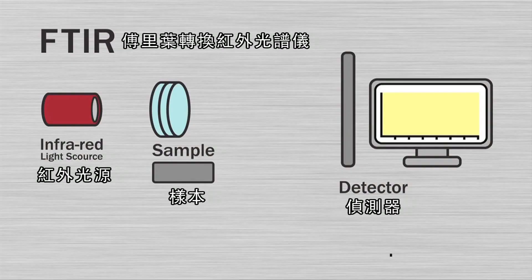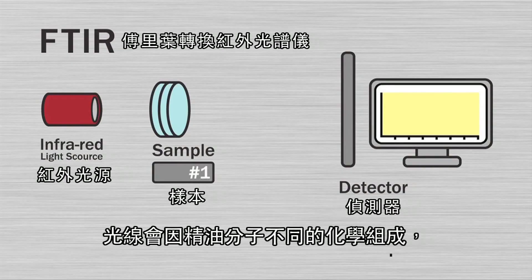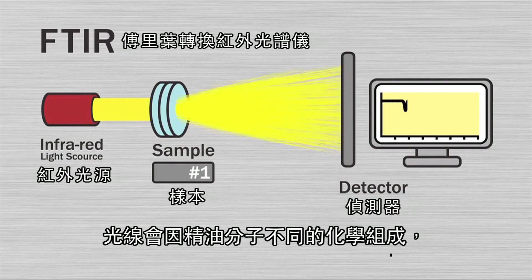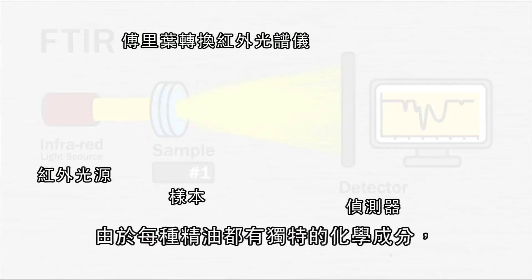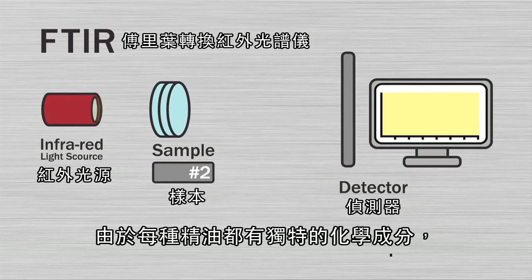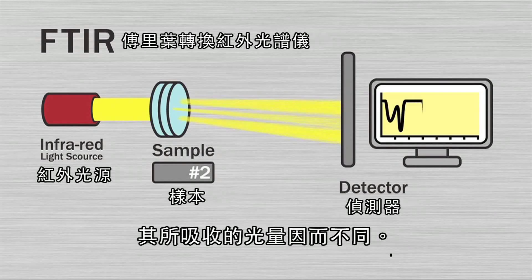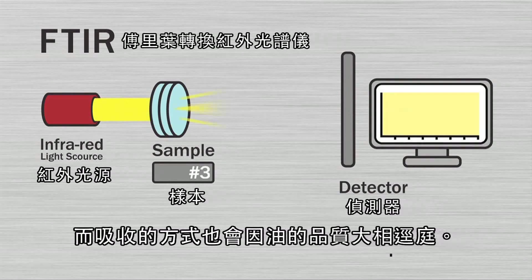Depending on the chemical structure of the essential oil constituents, the light will be absorbed in a unique pattern. Because each essential oil has unique chemistry, the absorption pattern will be different for each oil.